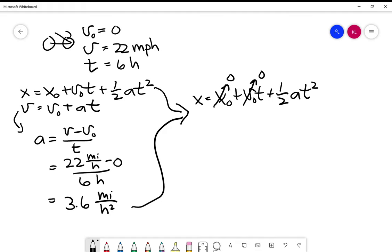The problem said that V naught is zero, and we're left with one half times 3.6 miles per hour squared times six hours squared. And this turned out to be 66 miles. And that was the answer.